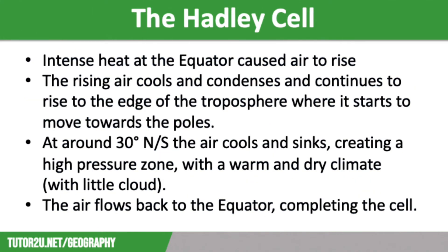The Hadley cell is the cell that you do need to know about. The sun shines intensely on the equator, heating the land, which in turn heats the air, which rises creating a low pressure zone at lower levels. The rising air cools and condenses, forming towering cumulonimbus storm clouds. The air continues to rise to the edge of the troposphere where it starts to move towards the poles, north or south. At around 30 degrees north and south the air cools and sinks, creating a high pressure zone with a warm and dry climate with little cloud — typically where deserts are found. Surface winds then take the air from the tropics back to the equator, completing this cell.